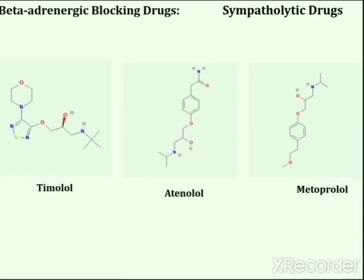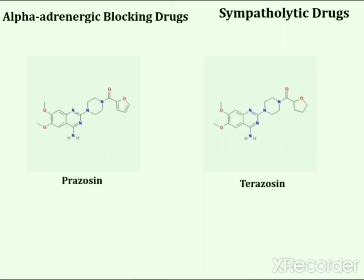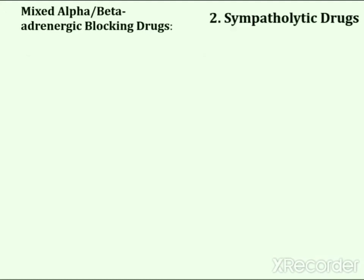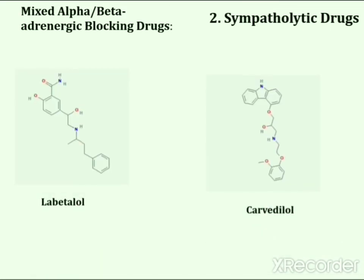The next subcategory is beta-adrenergic blocking drugs, which include timolol, atenolol, and metoprolol. The next subcategory is alpha-adrenergic blocking drugs, with prazosin and terazosin as the main drugs. The last subcategory of sympatholytic drugs includes mixed alpha-beta adrenergic blocking drugs, which include labetalol and carvedilol.